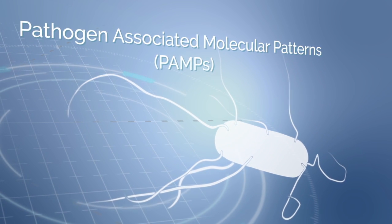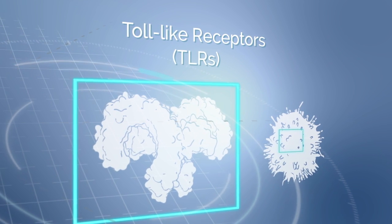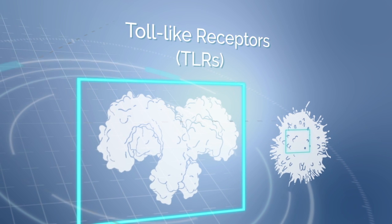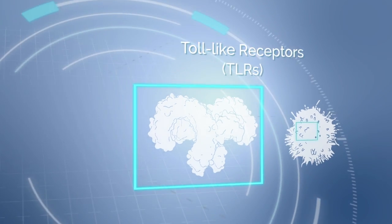Toll-like receptors, or TLRs, are a particularly important group of PRRs. Human beings have 10 identified members of the TLR family.